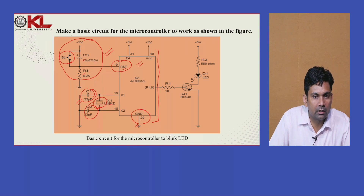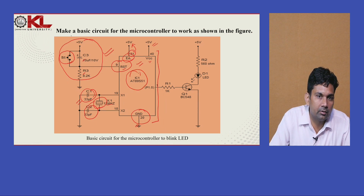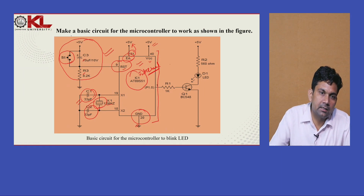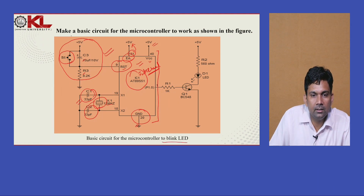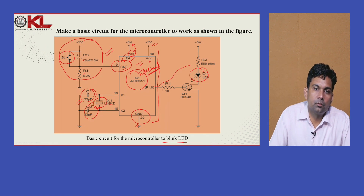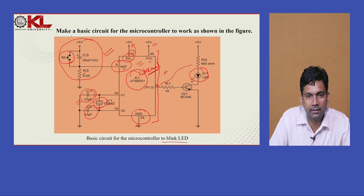The ground pin number 20 is connected to ground, VCC is connected to 5 volts, and the EA pin number 31 is connected to 5 volts — meaning we are using internal memory. After making this basic circuit, you should also make a circuit of two blinking LEDs connected to Port 1. You need to write a program to blink the LED at P1 — continuously turning on and off — so the LED performs a blinking operation.